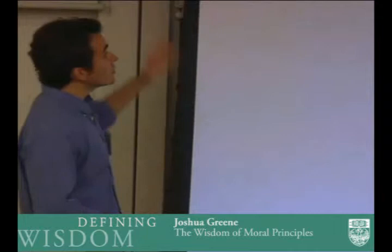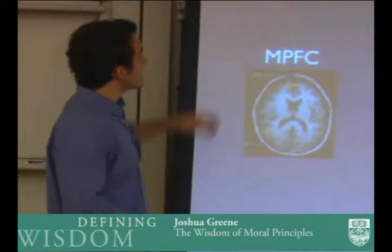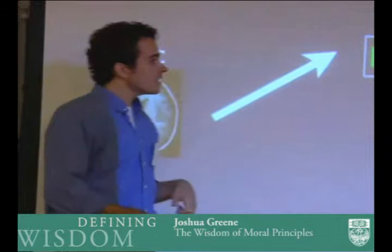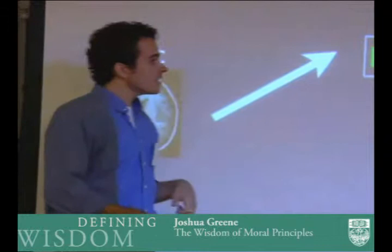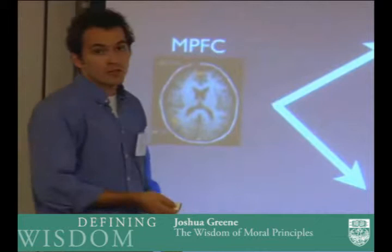This brings me to the third and final experiment. We're going to use the same methodology from experiment two, but run it in the scanner. Our prediction is that at the beginning, when people are making intuitive judgments, they'll be relying on medial prefrontal cortex, as previous work has demonstrated. But then those who are able to articulate a principle will show a shift in processing to dorsolateral prefrontal cortex, whereas those who cannot articulate an explicit version of the principle will continue to use medial prefrontal cortex.